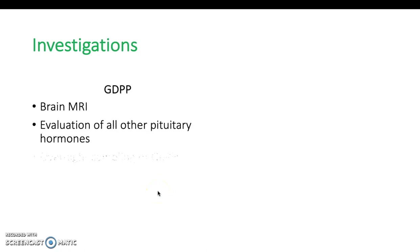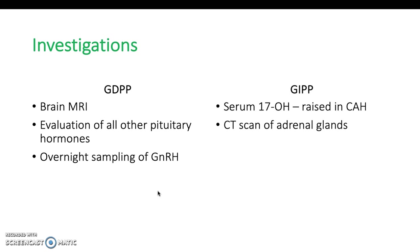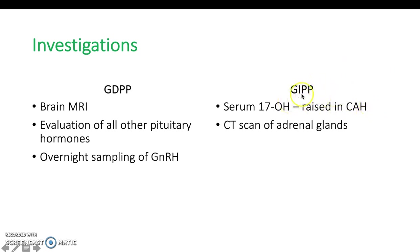Further investigations to separate between the two causes include a brain MRI to identify pituitary tumours, hydrocephalus, or the hamartoma. Serum 17-hydroxyprogesterone would be raised in congenital adrenal hyperplasia, a common cause of GIPP. A CT scan of the adrenal glands can identify where the endogenous source is coming from.